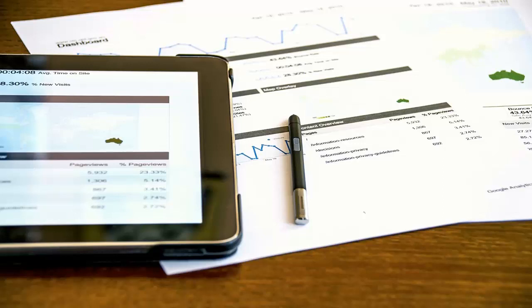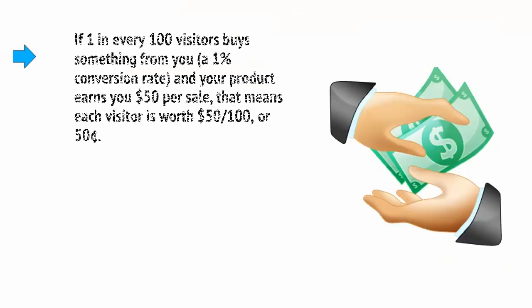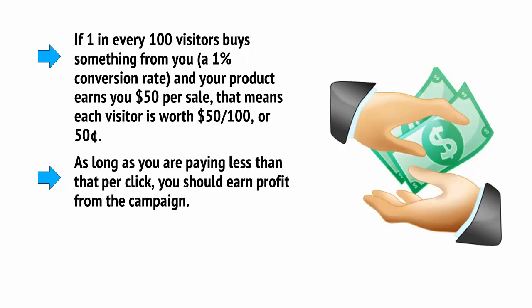The great thing about this system is it means you can actually guarantee ROI for your business. You do this by calculating how much it's going to cost you to bring each new visitor to your site, which will be equal to your CPC, or cost per click. You then look at your conversion rate — in other words, what percentage of new visitors become paying customers — and then you compare these numbers. So if one in every 100 visitors buys something from you, a 1% conversion rate, and your product earns you $50 per sale, that means each visitor is worth $50 divided by 100, or 50 cents. As long as you're paying less than that per click, you should earn profit from the campaign.